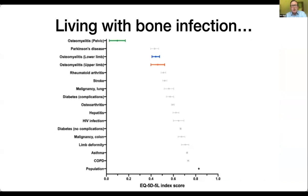This was a piece of work done by the Bone Infection Unit in Oxford. They gave quality of life questionnaires to all of their patients coming through the clinic. What you can see is that patients living with bone infection have a worse quality of life than those patients who have rheumatoid arthritis, who've had a stroke, or who have complications associated with diabetes. So it's really important for us to treat these patients expediently and as well as we can.